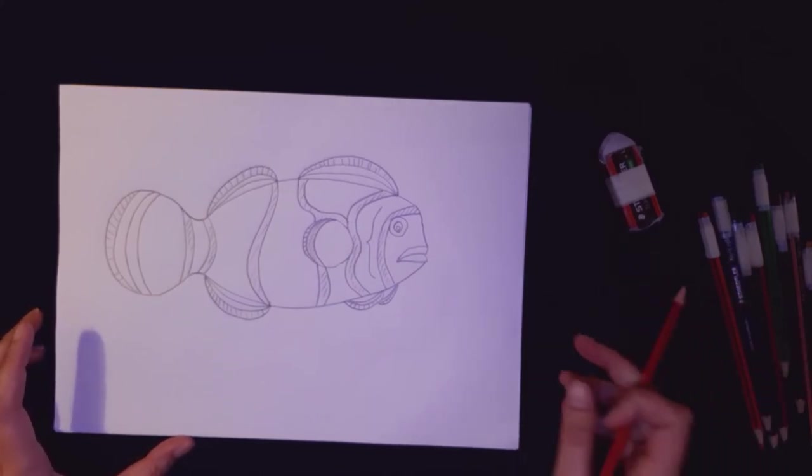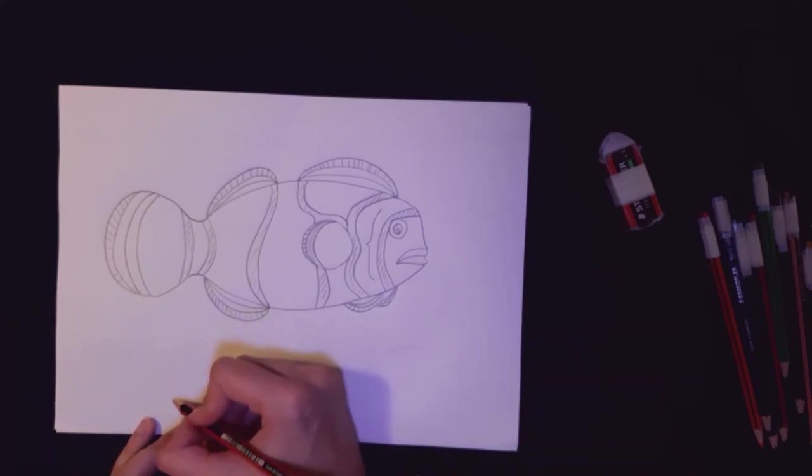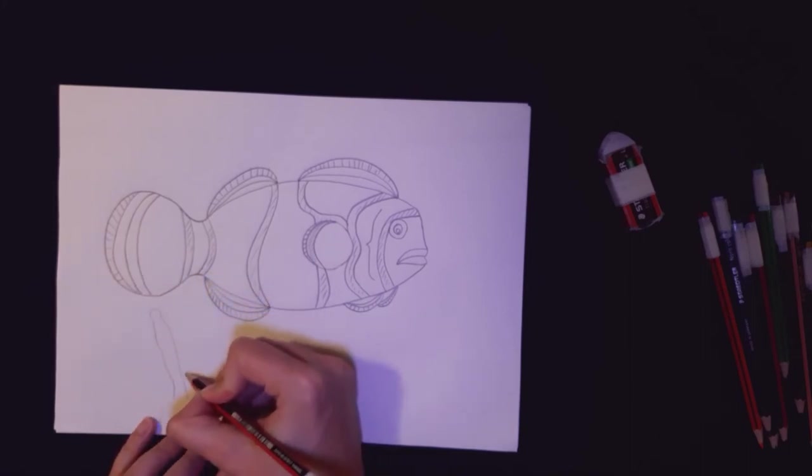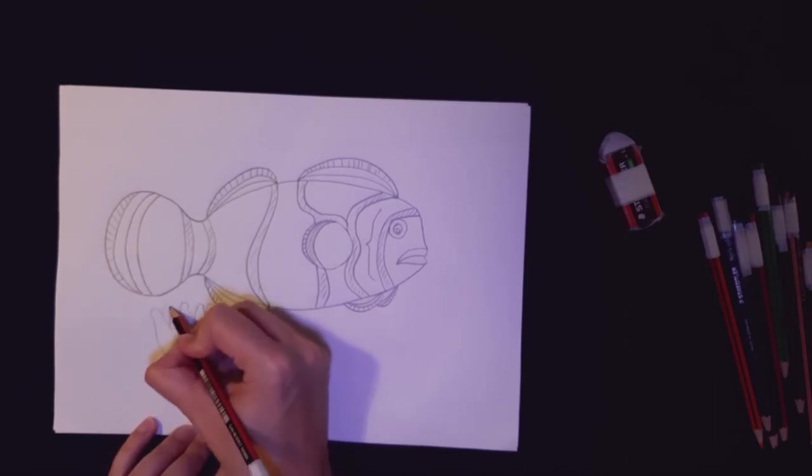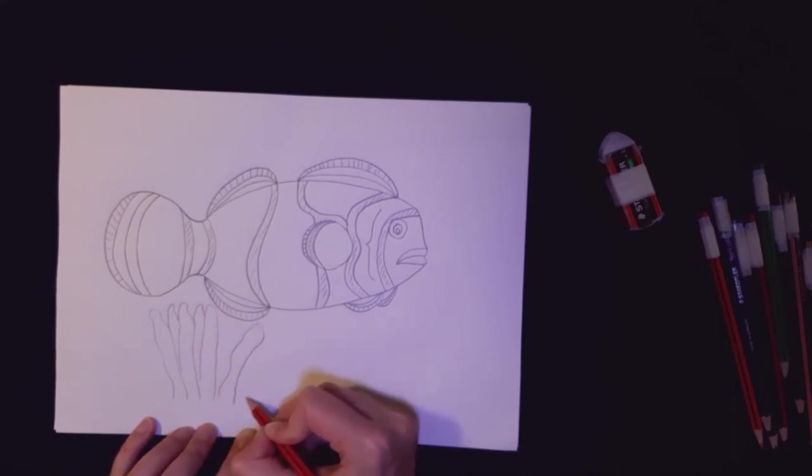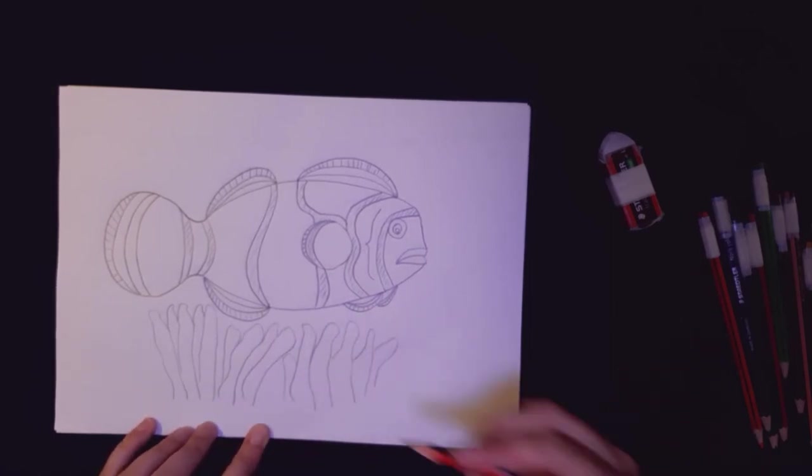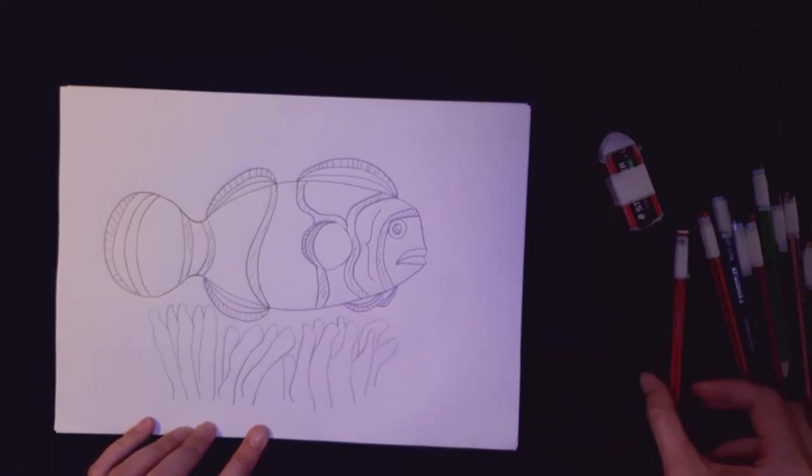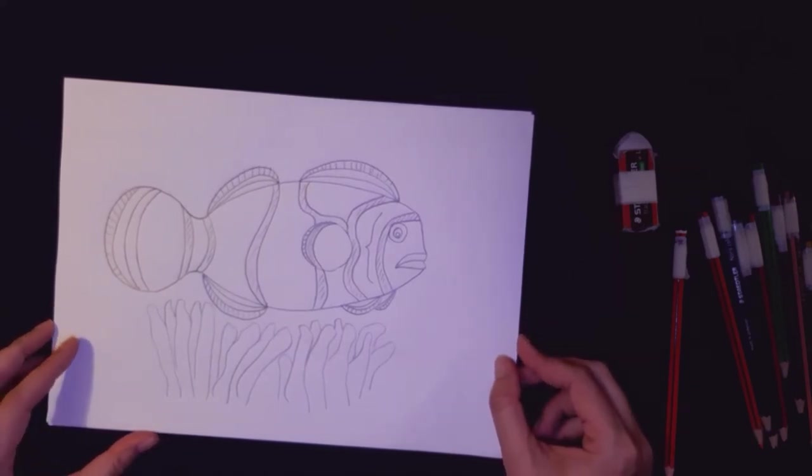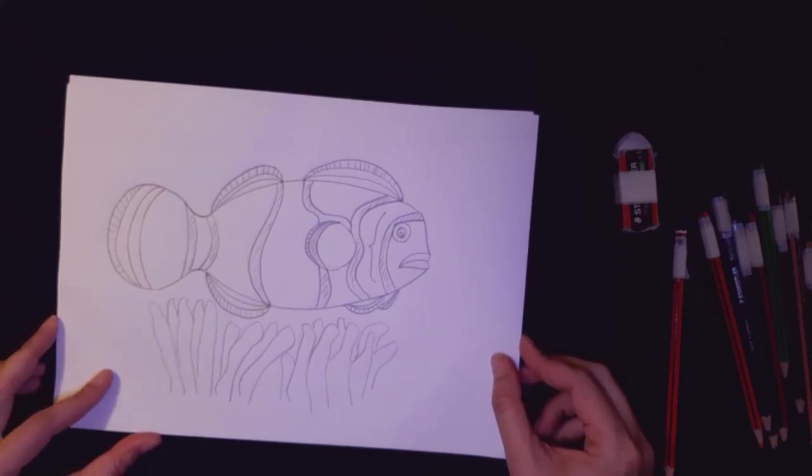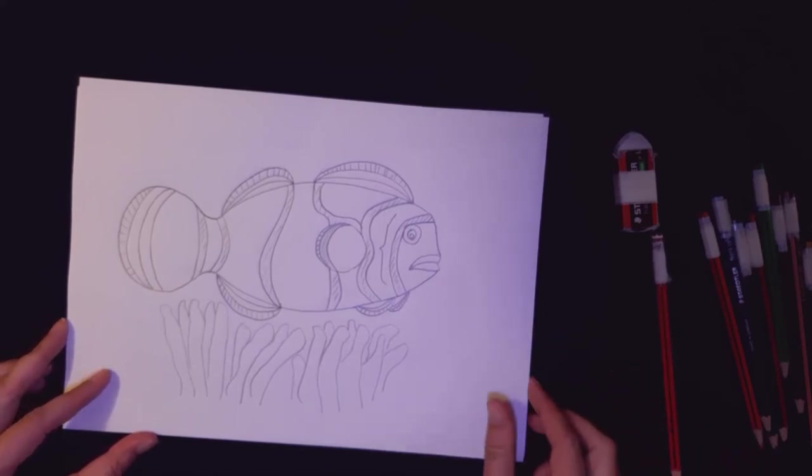Now, clownfish live in sea anemones and sea anemones are poisonous except to clownfish. So we're going to draw some sea anemone fingers down at the bottom here. And they're really just a whole lot of sort of squiggly fingers. You can do a whole lot. Let me do some behind in the gaps. And they're sort of waving in the water. So they can be pointing in different directions. Many people struggle to say the word anemone, but actually it's got the name Nemo. Anemone. So that's how you can remember how to say it, how to spell it. It's because Nemo lives in anemone.